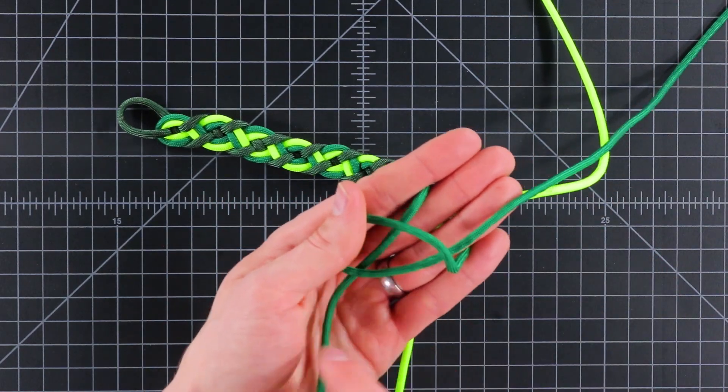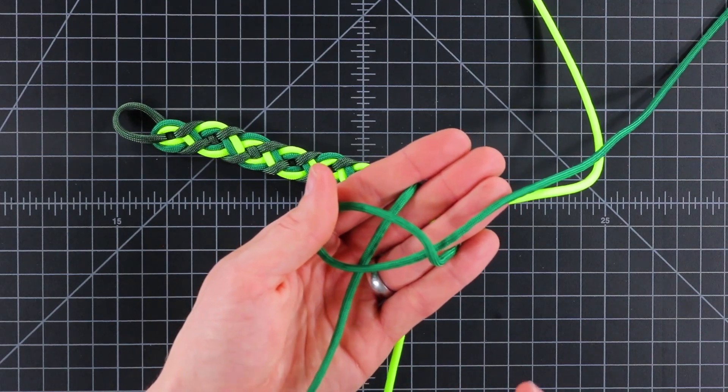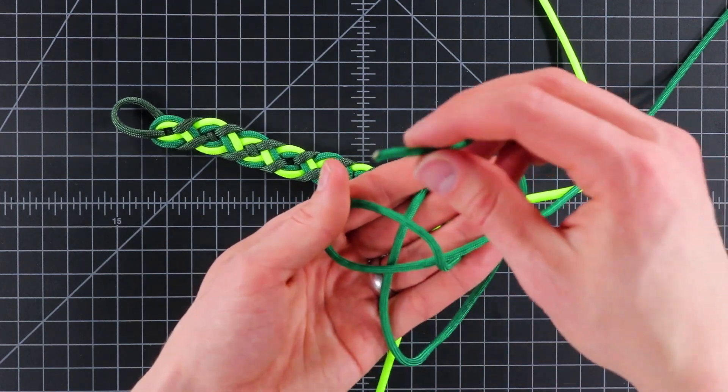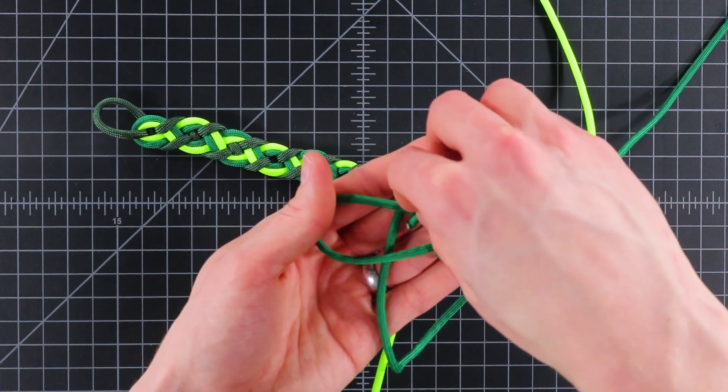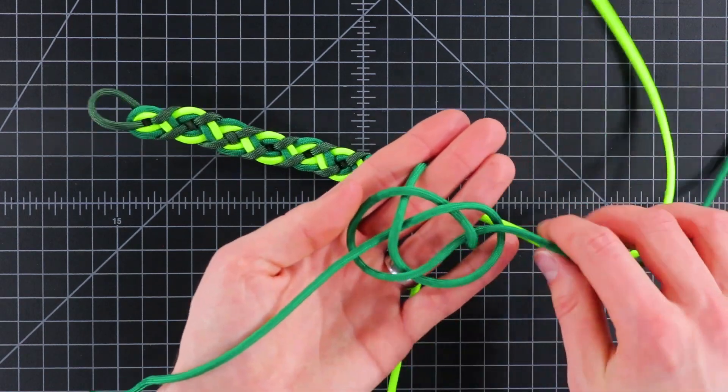So we've got that in our palm. And then this bottom cord goes underneath the other one. Over the first. Under the second. And over the third. Like that. And this is called a caric bend.